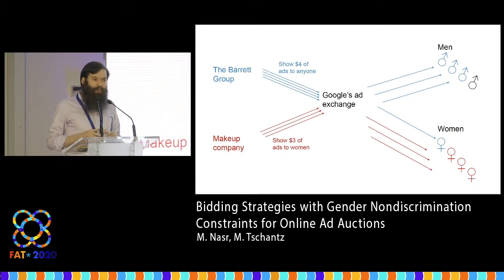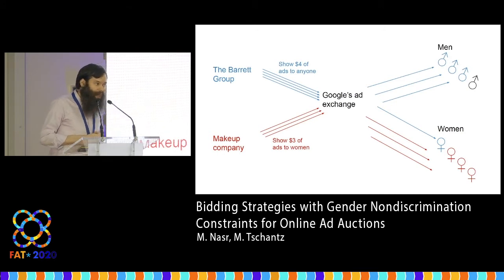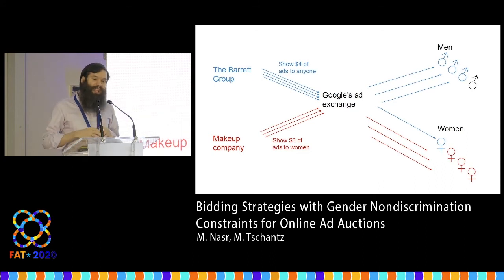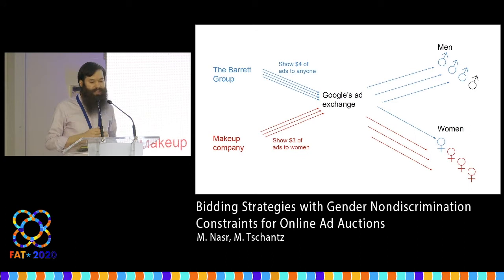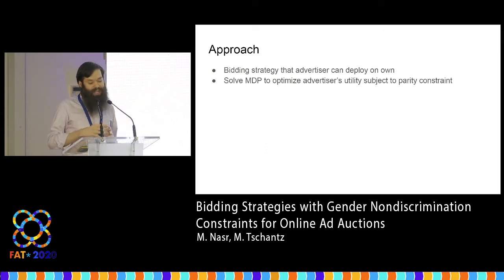A different approach would be to modify Google's ad exchange so that the auction can guarantee certain properties about how many men and women the ads are shown to. But this seems difficult because it would require Google to make a change affecting all advertisers, and they might be hesitant to make such a large global change. So what we did instead was explore bidding strategies that an advertiser can deploy on its own as just a local change.